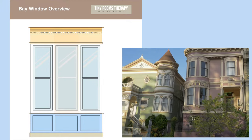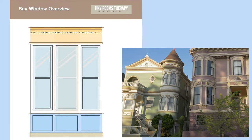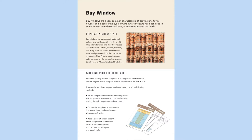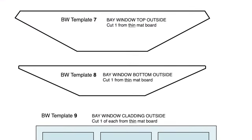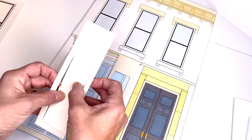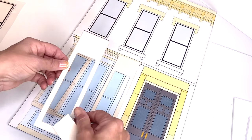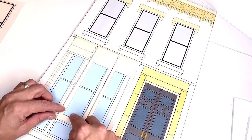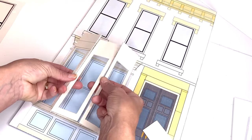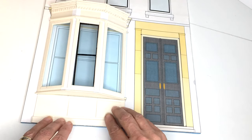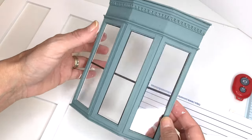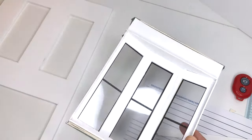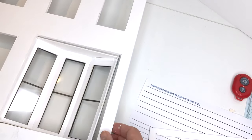Bay windows are a very characteristic feature of many townhouses. In the template section of this new ebook you'll find every single pattern needed to create a bay window. We are cutting them from matte board, then assembling the parts and painting them. Step-by-step instructions guide you through the production process.